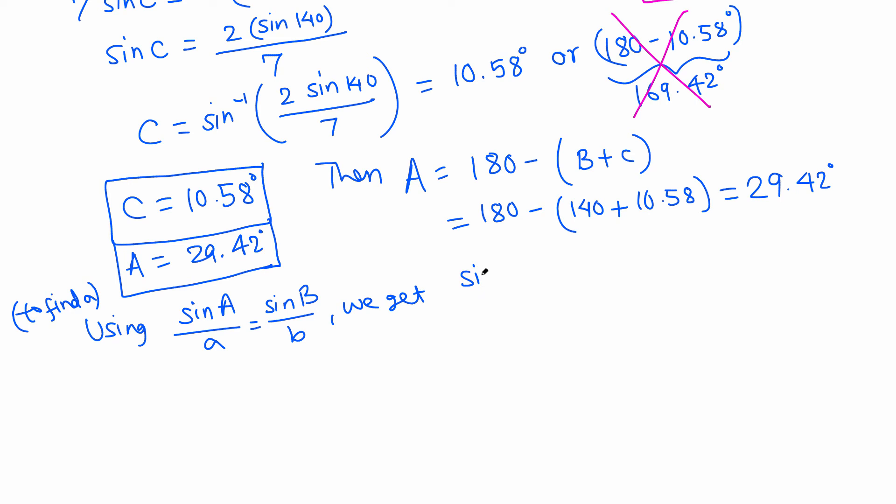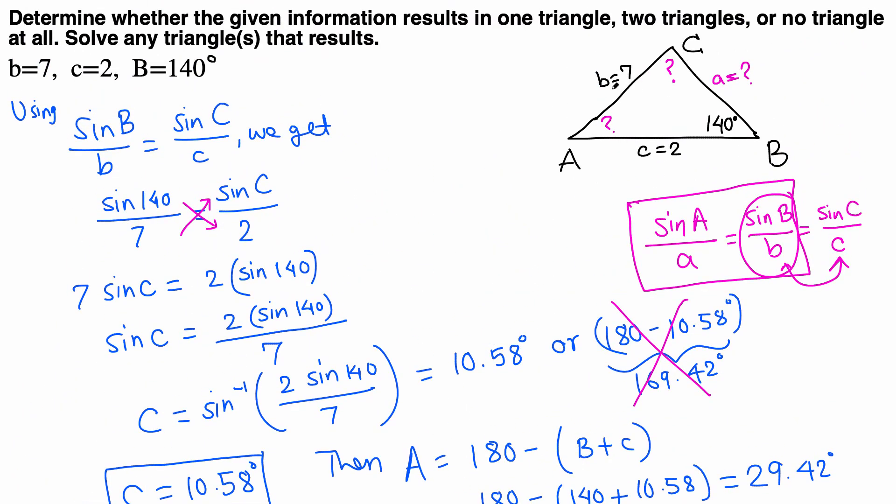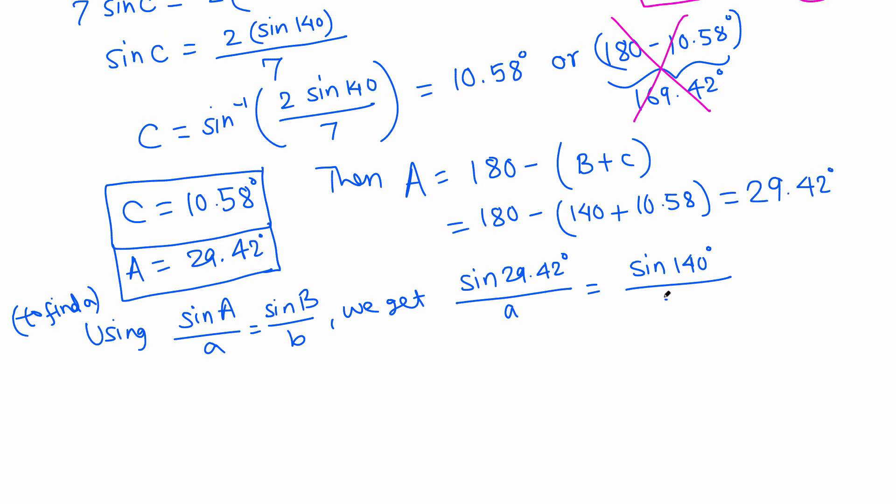Using sine law: sine A over a equals sine B over b. We get sine A is 29.42 degrees, this is over side a that's unknown, equals sine B, which is 140, over lowercase b, which is 7.